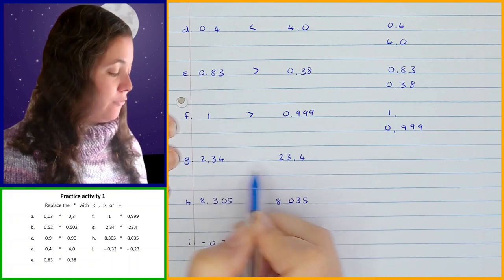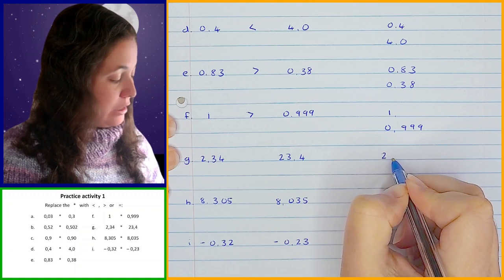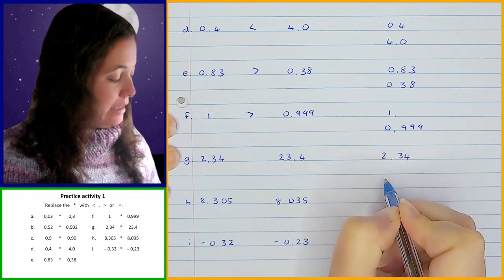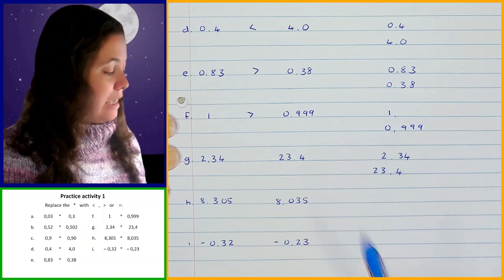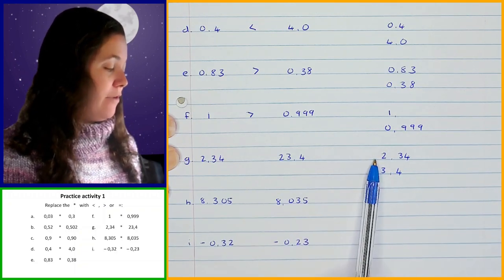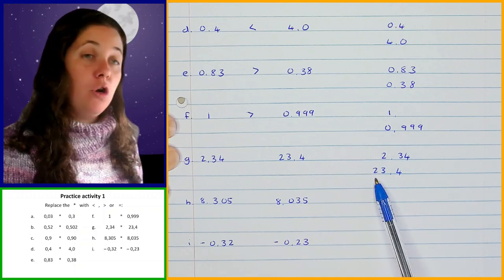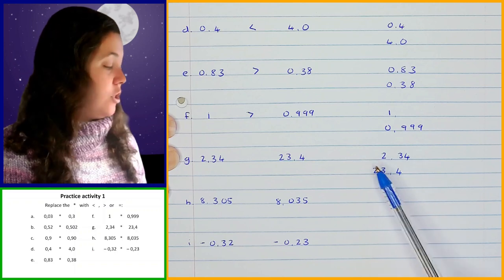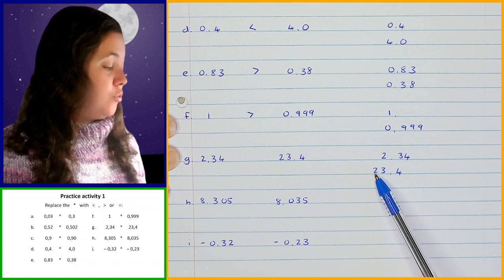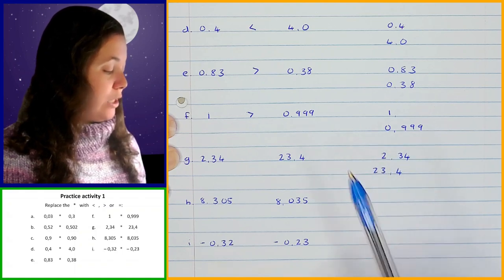Then I've got 2.34 and 23.4. When I write them underneath each other I get 2.34 and 23.4. As I move from left to right, I don't have anything in the tens position for 2.34, but I do for 23.4 — so that's the same as 0 versus 2. 2 is greater than 0, so 2.34 is going to be less than 23.4.